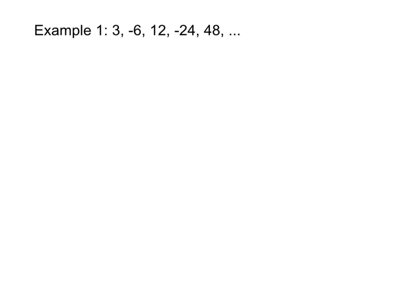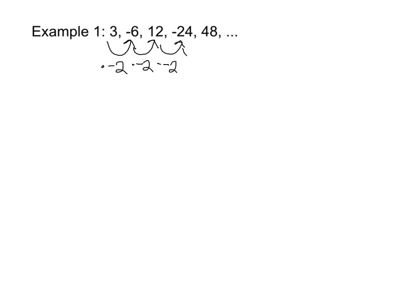So for our first example, we're going to try to find the next term using inductive reasoning. So I might notice it looks like to get from here to here, the first term to the second term I'm doing multiplication by negative two, and then again I multiply by negative two to get to the third term, and it looks like that pattern continues all the way through, which confirms my original guess of multiplying by negative two.